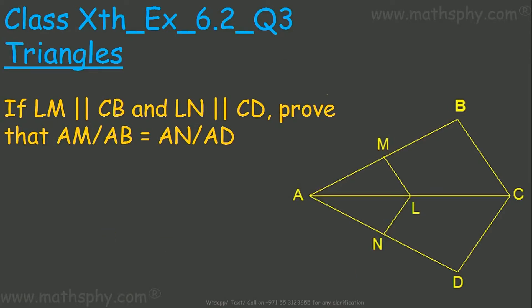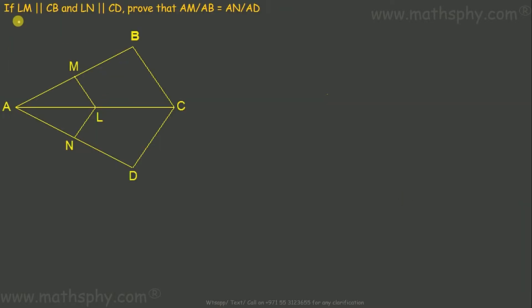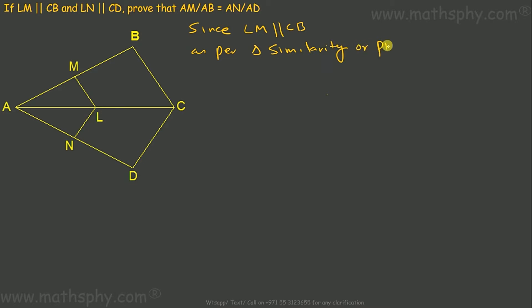The question states: if LM is parallel to CB and LN is parallel to CD, prove that AM over AB is equal to AN over AD. Since LM is parallel to CB, we apply the triangle proportionality theorem.